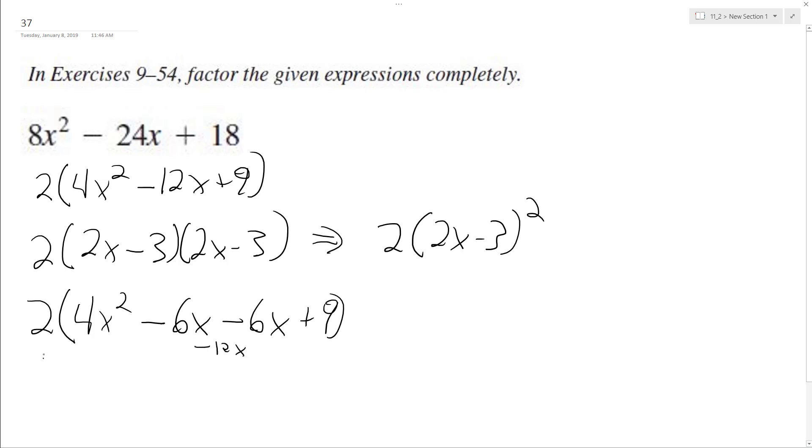This ends up being minus 12x. So if we multiply this back through, we get 8x squared minus 24x plus 18.